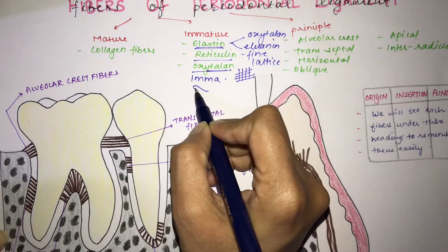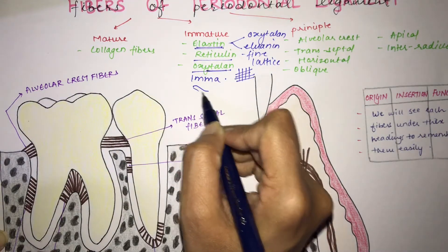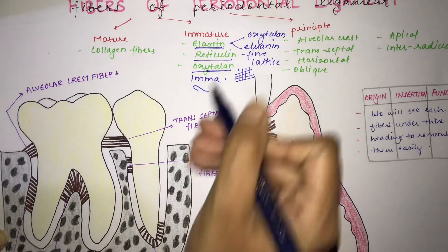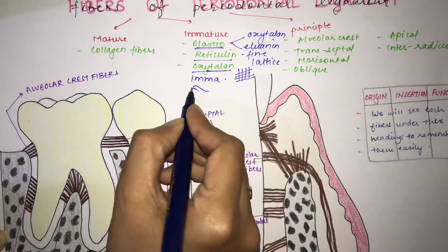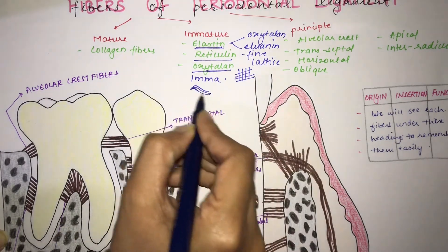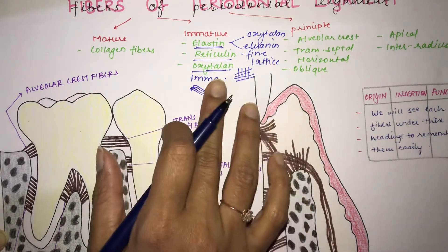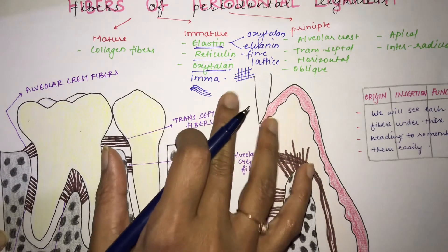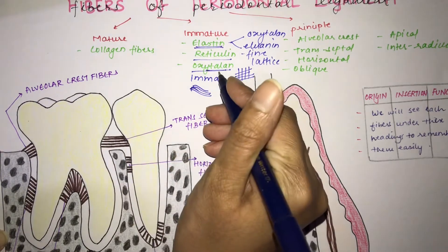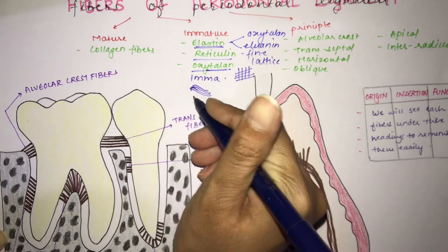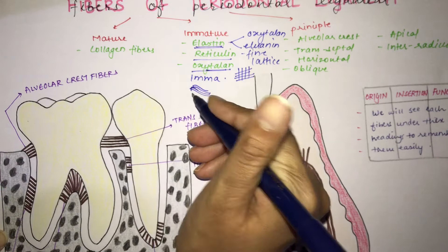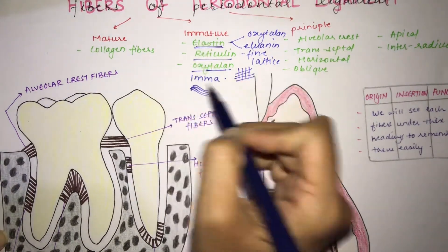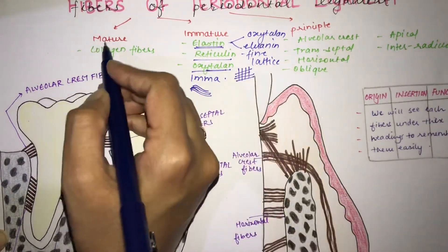The next fiber is oxytalin. Oxytalin is an immature fiber formed in a complex manner at the apex of your tooth, running in the axial direction. Its exact function is not fully known, but it helps in supporting the blood vessels of the PDL.